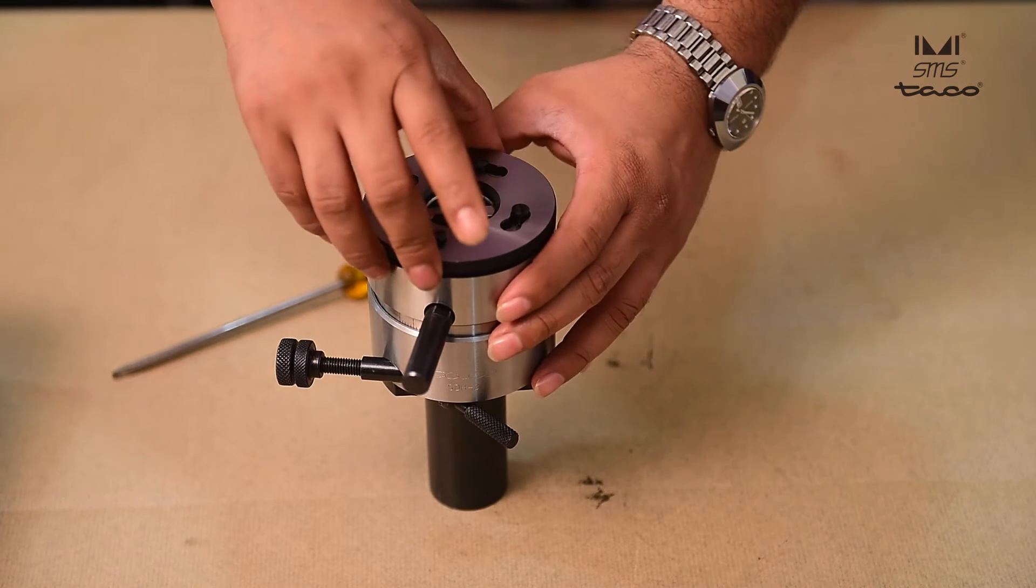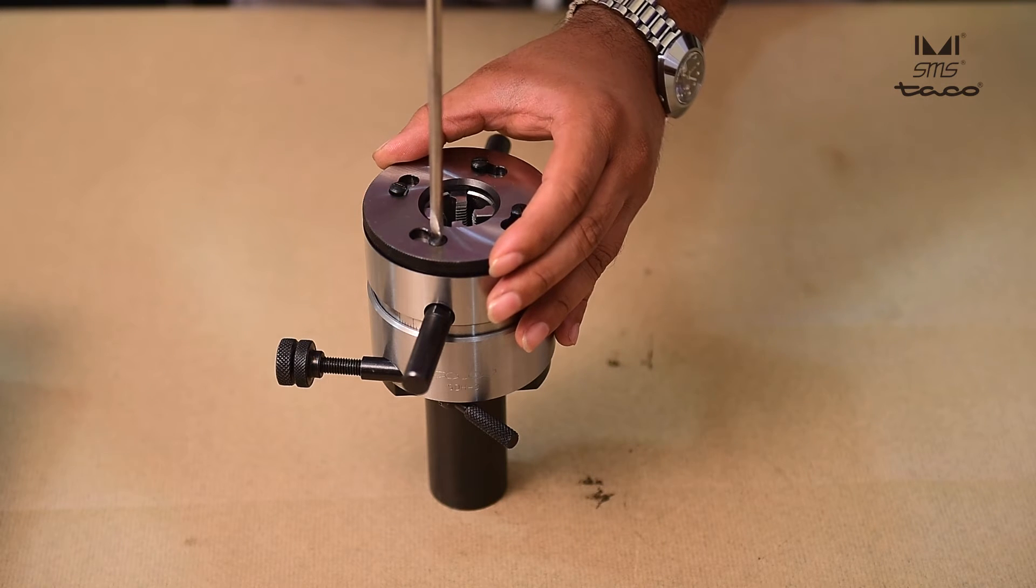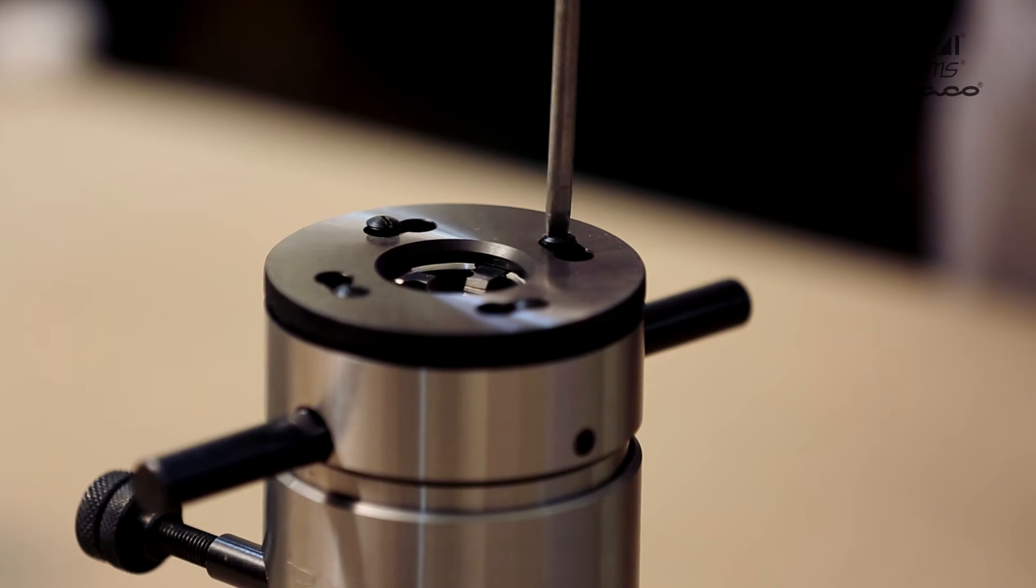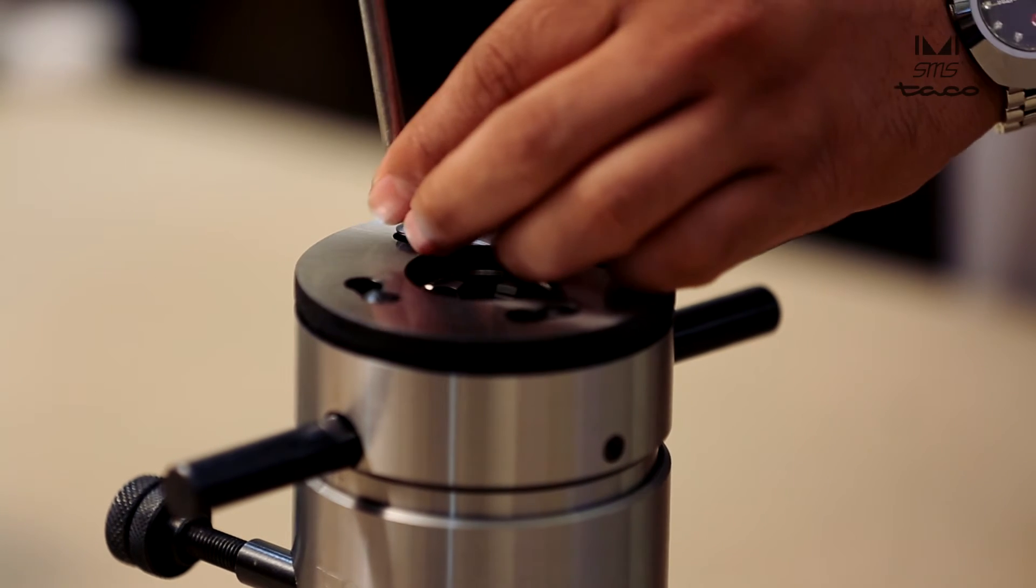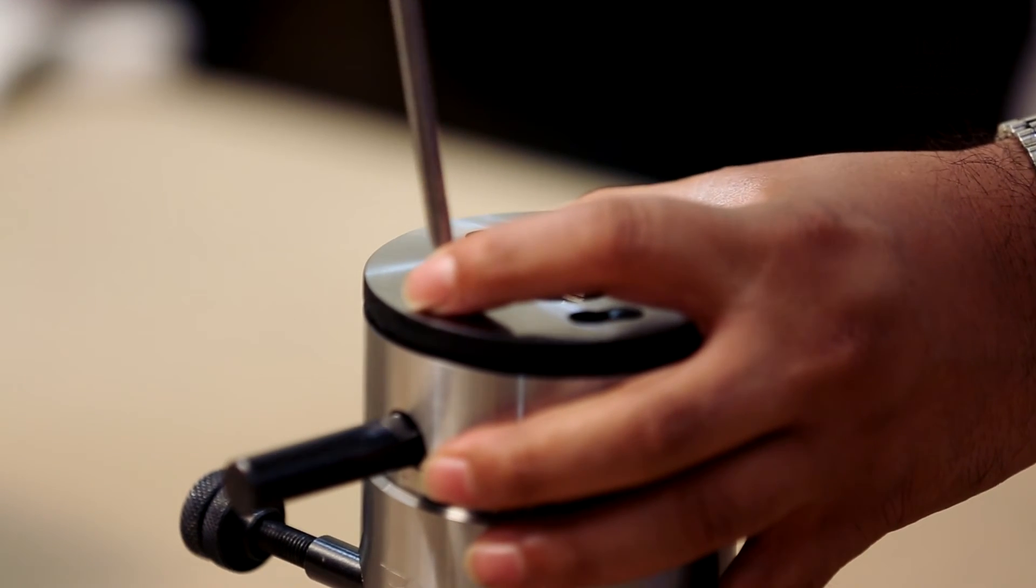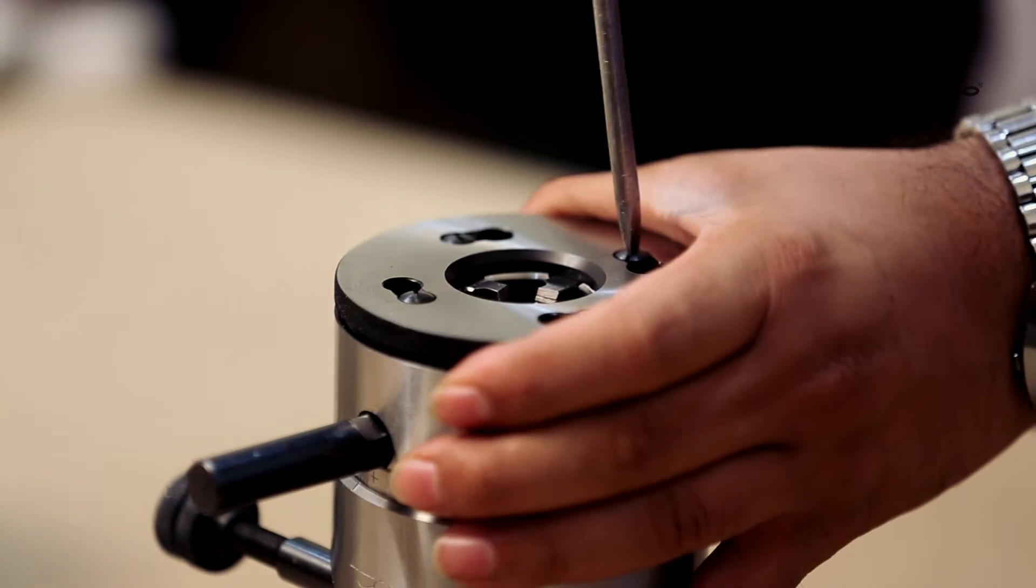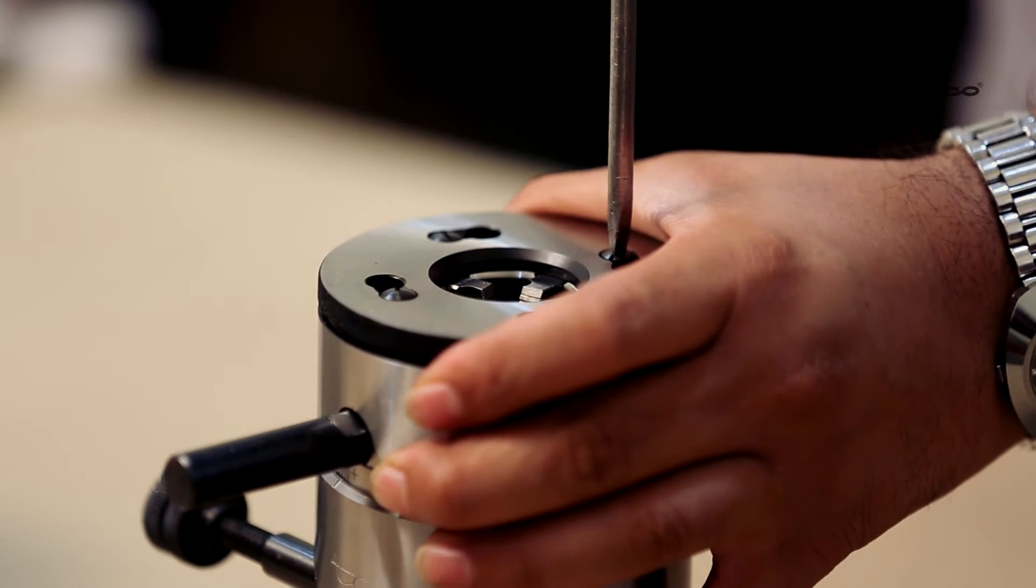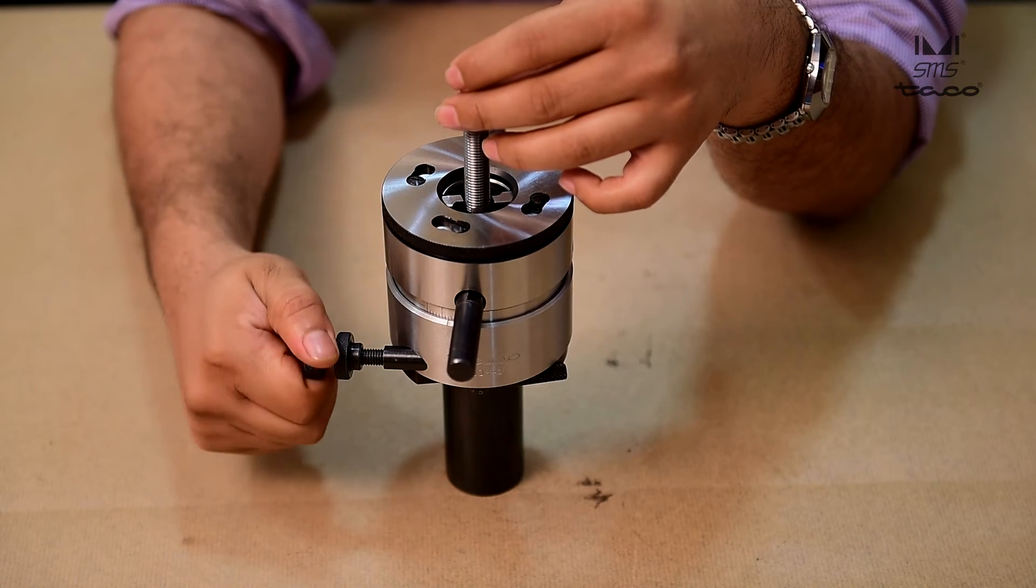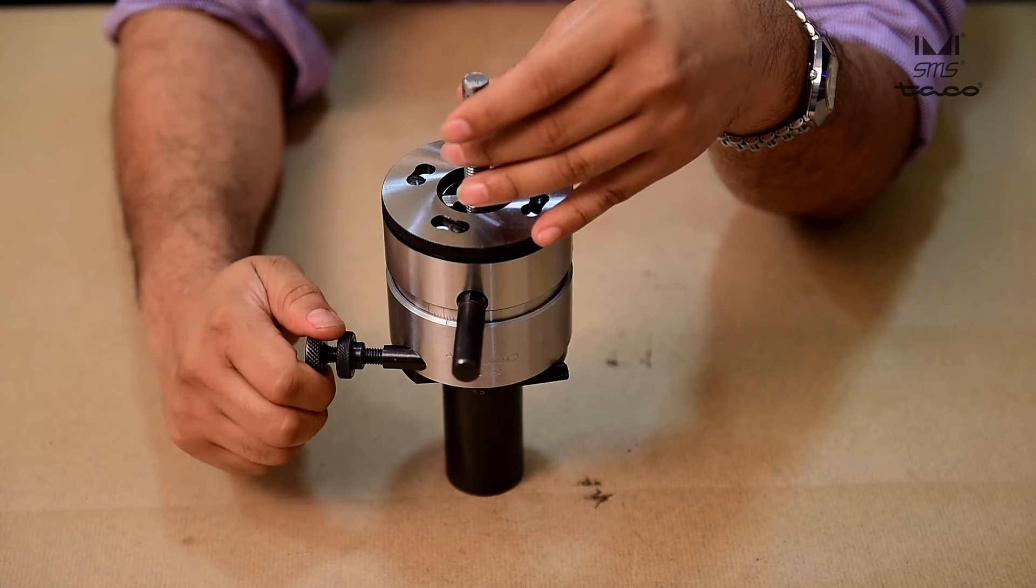In default closed position, use a thread gauge to set your thread size. Care should be taken not to force the chasers into the setting gauge. Additional minor adjustments may be necessary to get the correct size.